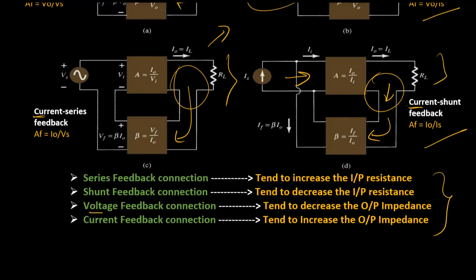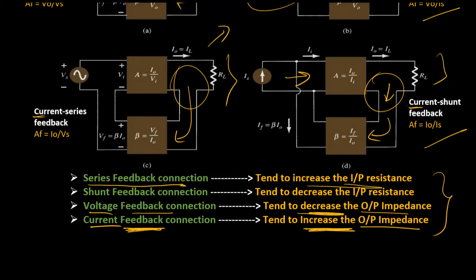The voltage and current parameters affect the output impedances: if it is a voltage feedback connection, it will definitely decrease the output impedance. If we have a current feedback connection type, it will contribute to an increase in the output impedance. Whereas for series feedback connections, it will increase the input resistance, and for shunt feedback connections, it will contribute to a decrease in input resistance.